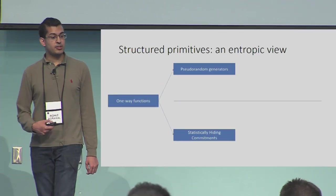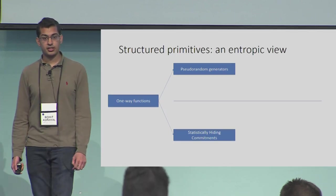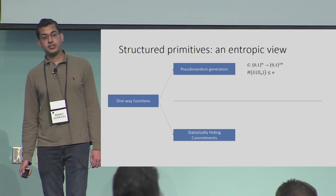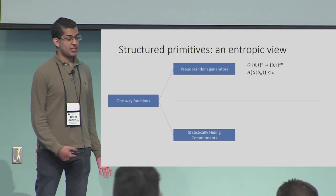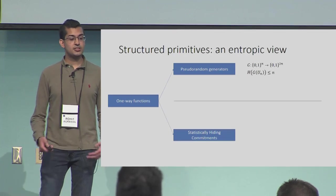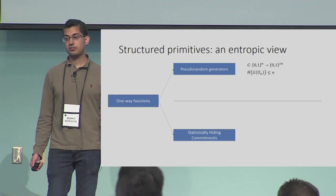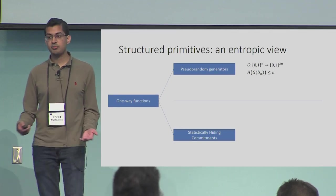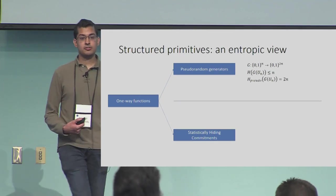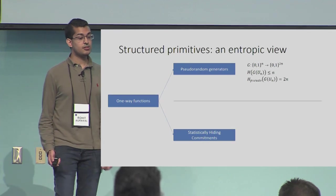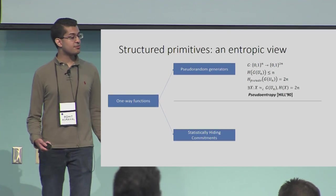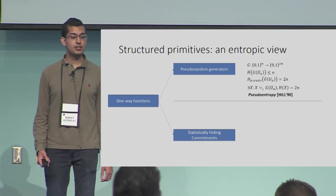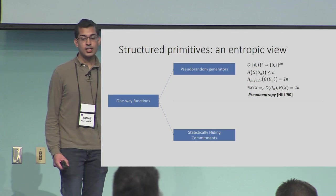Let's understand pseudorandom generators and statistically hiding commitments from an entropy-theoretic view. A pseudorandom generator is a function from n-bit strings to 2n-bit strings. The Shannon entropy of the output is at most n — trivially, since you can't increase entropy by applying a function. But from the point of view of a computationally bounded adversary, the output looks uniform, so the computational pseudo-entropy of the output is as if g(U_n) had full entropy 2n. Formally, there is some distribution X computationally indistinguishable from the output that does have true Shannon entropy 2n. This is the famous notion of pseudo-entropy introduced in the seminal work of Håstad, Impagliazzo, Levin, and Luby.